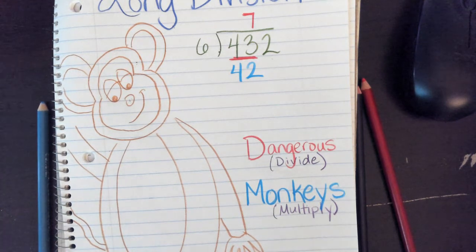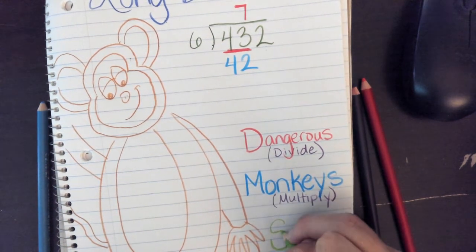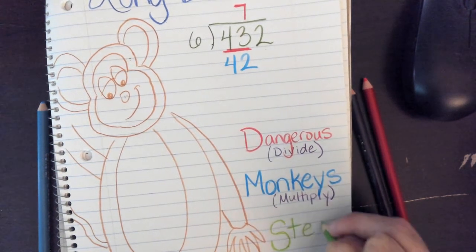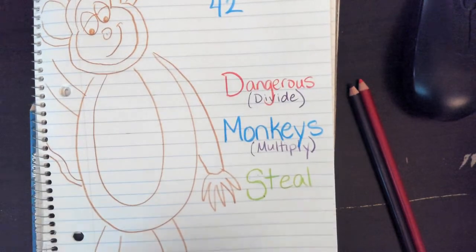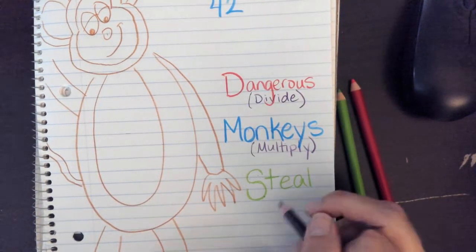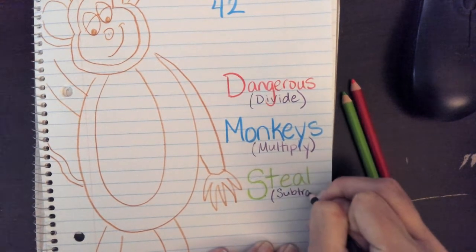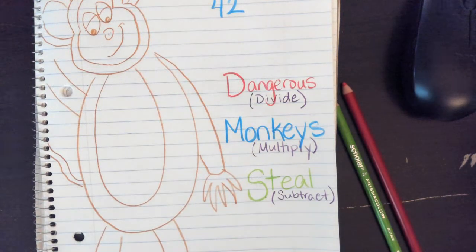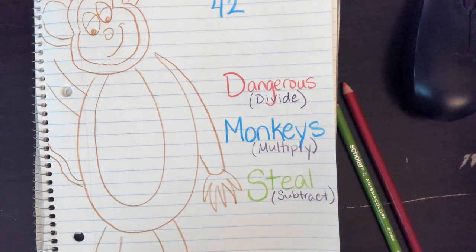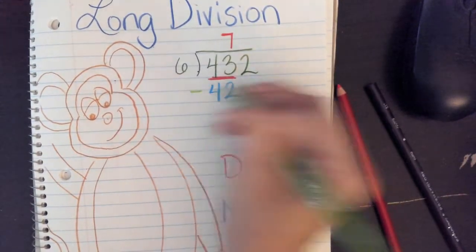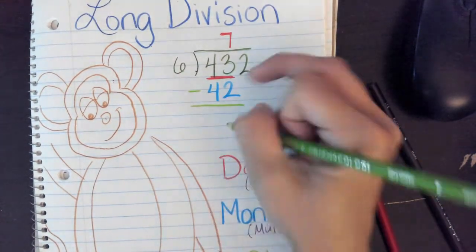This dangerous monkey is swiping things — steal. Dangerous monkeys steal. The S in 'steal' tells you that you are going to subtract next. Dangerous monkeys steal — and steal reminds you to subtract. So up here, I'm going to subtract: 43 minus 42 is 1.